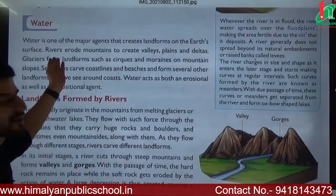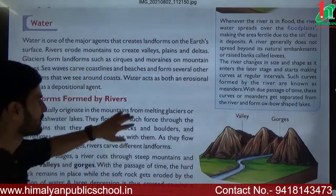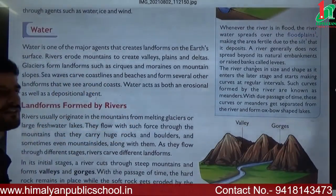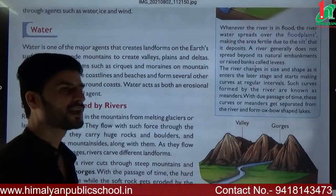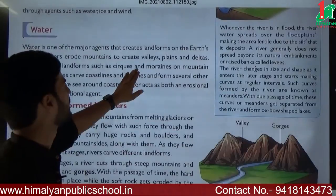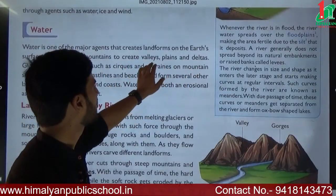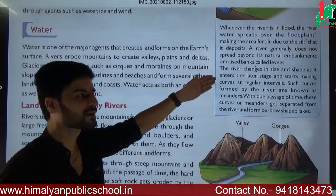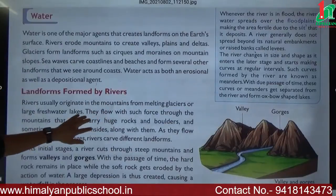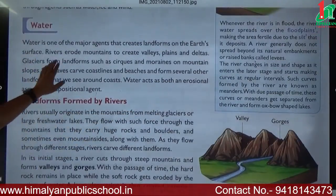Rivers erode mountains to create valleys. River flows near mountains, erodes them, and creates valleys, plains and deltas. These are landforms created on the earth's surface by water. Valleys, plains, and deltas are the landforms which water — through rivers — makes.